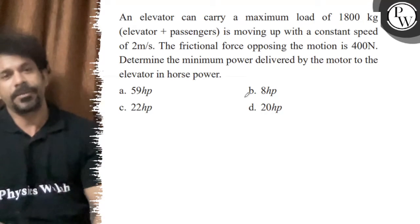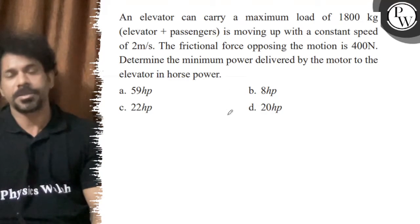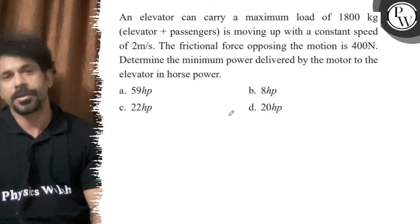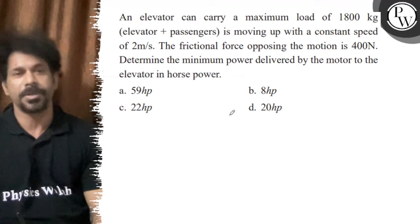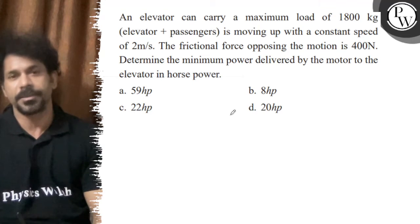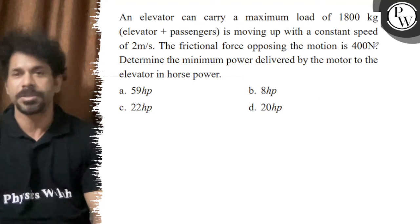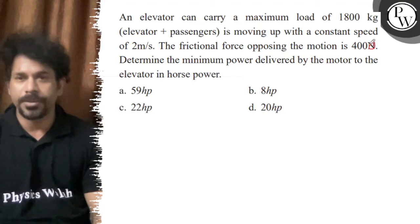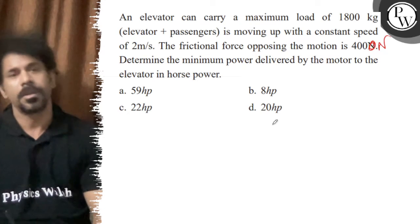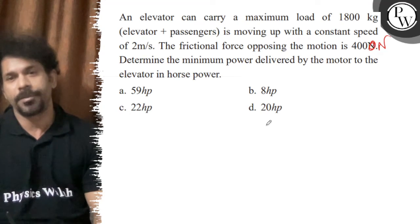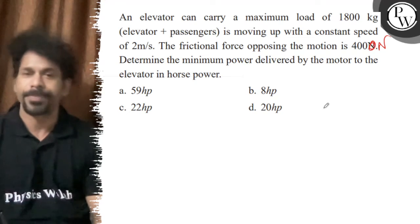Hello, let's see the question. An elevator can carry a maximum load of 1800 kilogram, is moving up with a constant speed of 2 meter per second. The frictional force opposing the motion is 4000 newton. Determine the minimum power delivered by the motor to that elevator in horsepower.